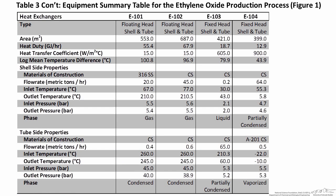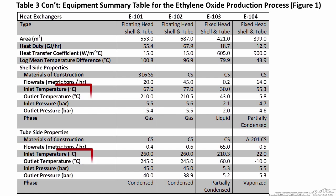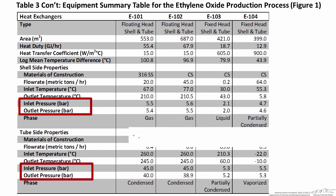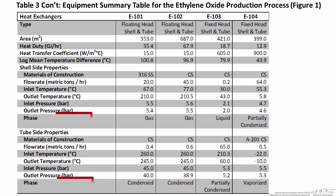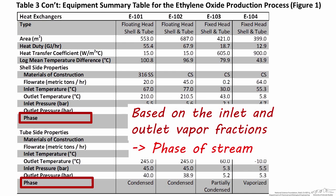The last pieces of information you should provide in your equipment summary table are fairly straightforward and can be found easily if you're using a process simulator. Include the flow rate of each stream, the inlet and outlet temperatures, the inlet and outlet pressures, and the phase of both tube and shell-side streams. Most of this can be copied and pasted from the stream table. The phase designation is something you should interpret based on the vapor fraction of the stream coming in and going out of the heat exchanger.